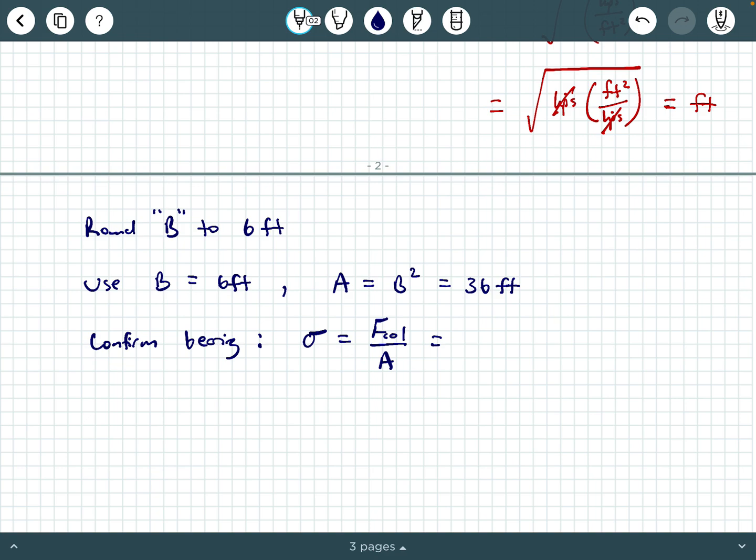Now what would that give you for your area? That would give you area as B squared, which is 36 square feet. And then you can confirm the bearing by saying that your applied bearing pressure would then become F call over area that you are using here. So if F call is still 100 kips divided by 36 square feet, you end up getting 2.78 ksf.